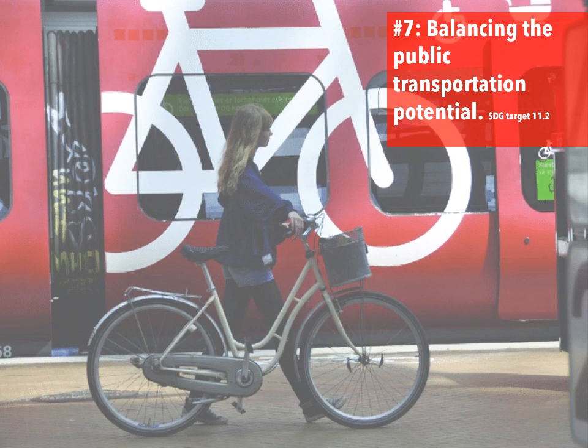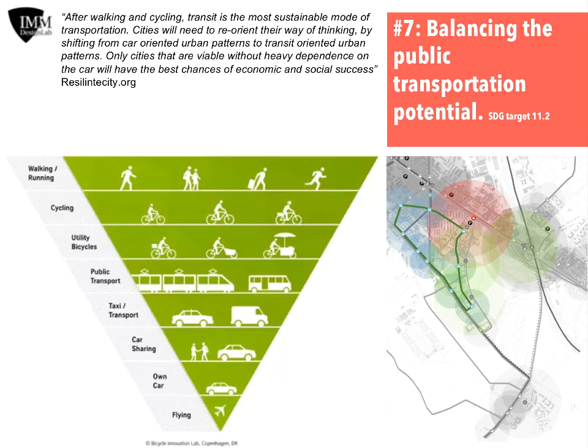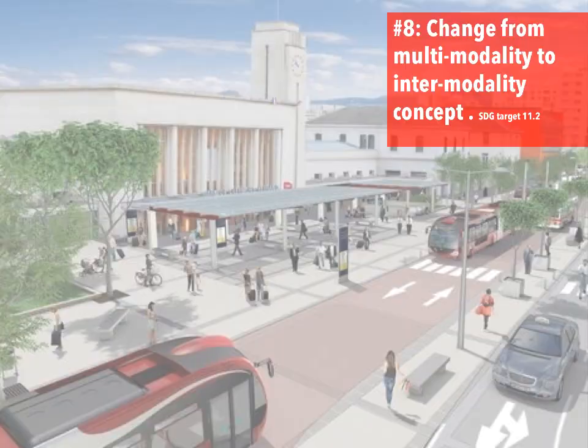DOP No. 7, Balancing the Public Transportation Potential, is correlated with the UN's SDG target 11.2. The main aim of this principle is to moderate the use of private car in city context, reducing its environmental impact, as well as physical consequences of vehicles in urban areas, such as pollution, emissions, traffic jams, and congestion, and impacts on safety of non-vehicular road space users. The aim is to make urban mobility more efficient.